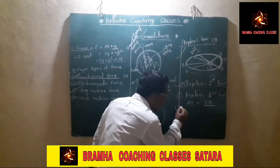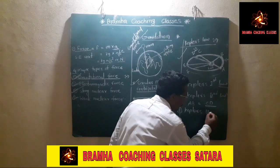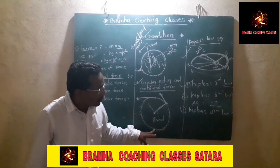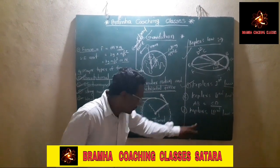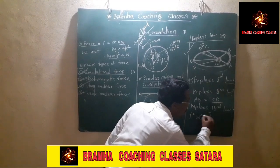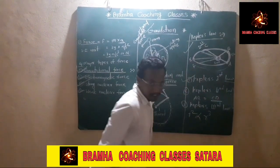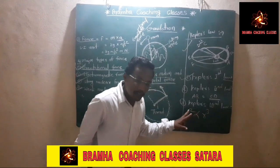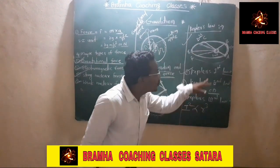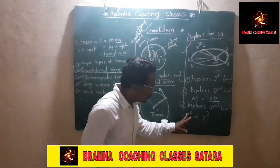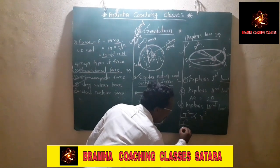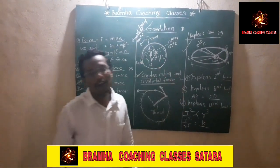Kepler's third law states that the square of the period of revolution around the sun — T² — is directly proportional to the cube of the mean distance between the planet and the sun — R³. So T² is directly proportional to R³, which can also be written as T² divided by R³ equals a constant k.